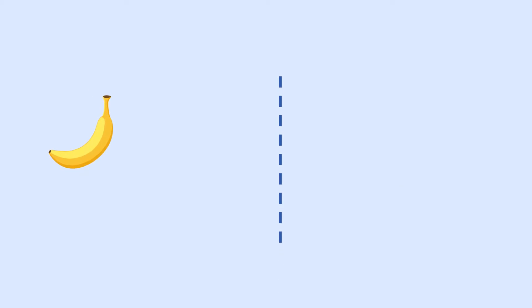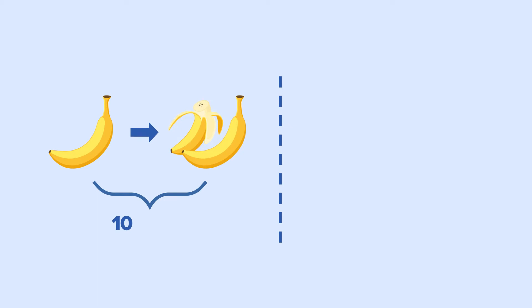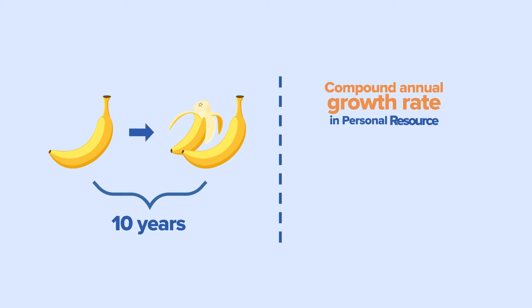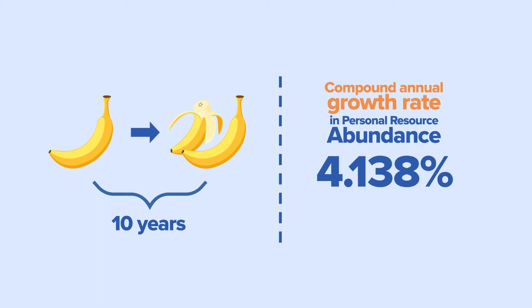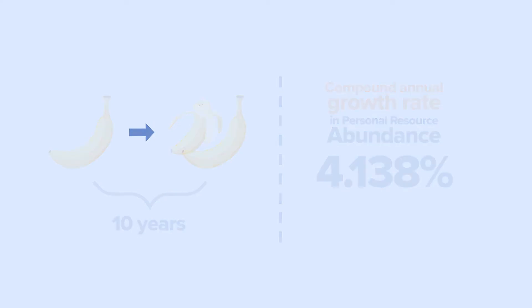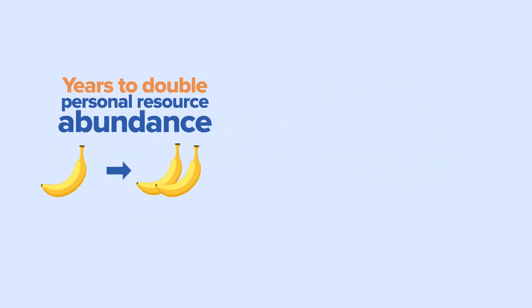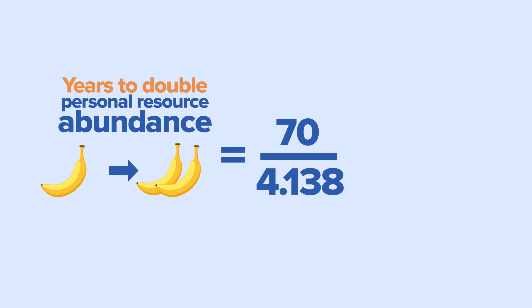In our banana example, abundance increased from 1 to 1.5 in 10 years, indicating a Compound Annual Growth Rate in Personal Resource Abundance of 4.138%. The years to double the Personal Resource Abundance of bananas will thus be equal to 70 divided by 4.138, or around 16.9 years.